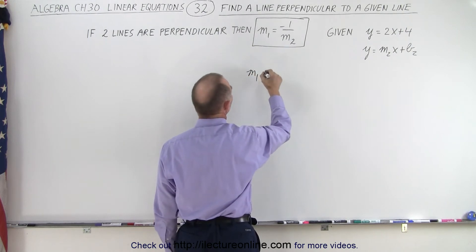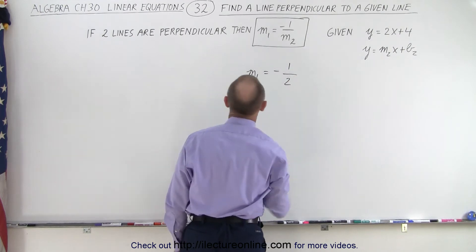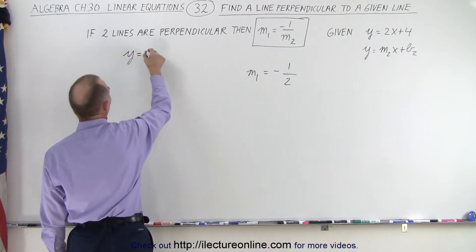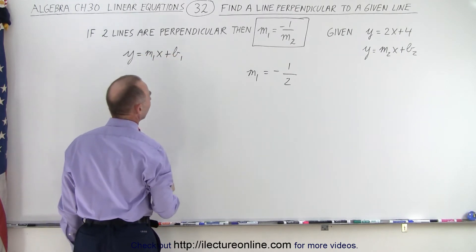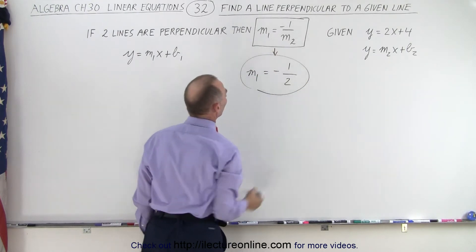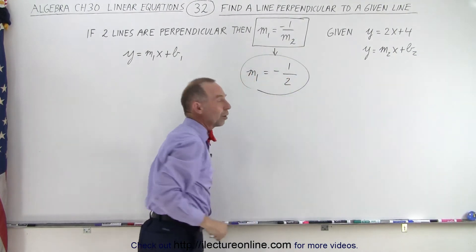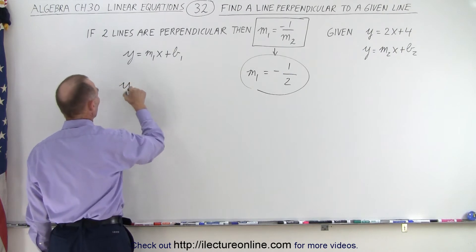So m1 is going to be equal to minus 1 over m2, and m2 in this case is going to be equal to 2. And so we're looking for a line that has the general formula y is equal to m1x plus b1, and notice that we have found m1 by using this equation. All we have to do is plug in the slope of the second line in here and that gave us the slope of the first line.